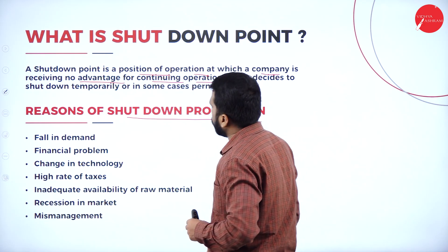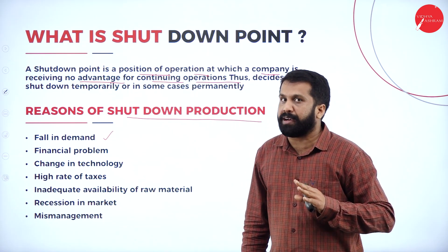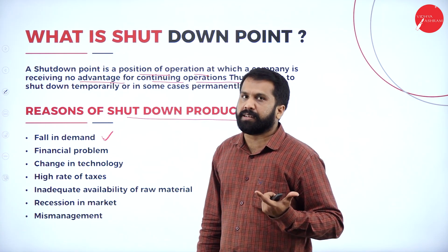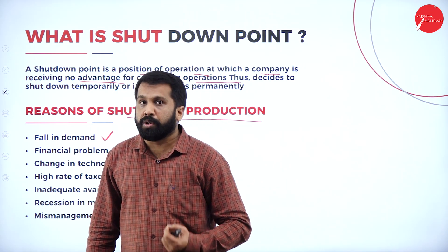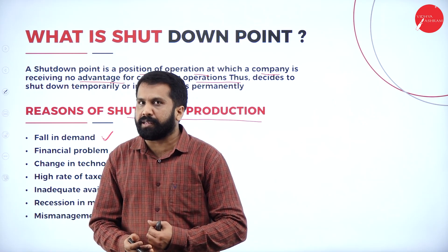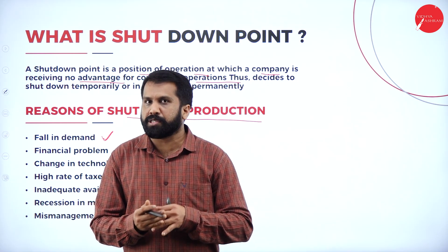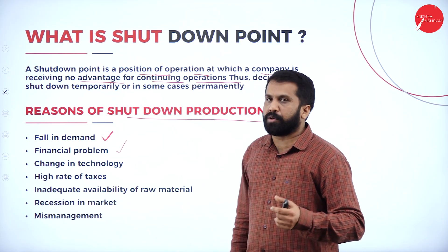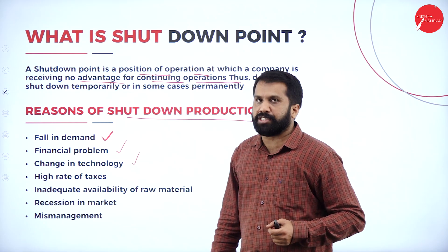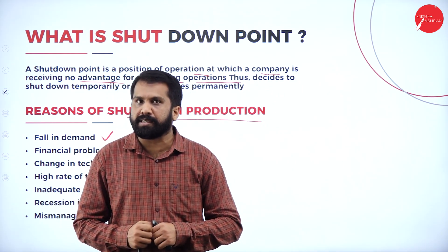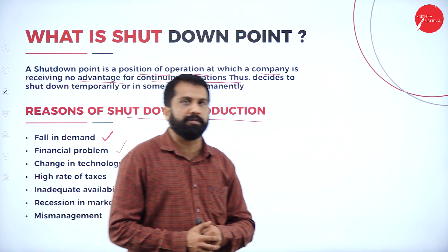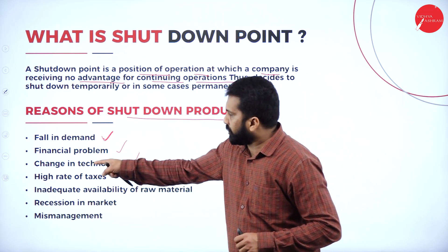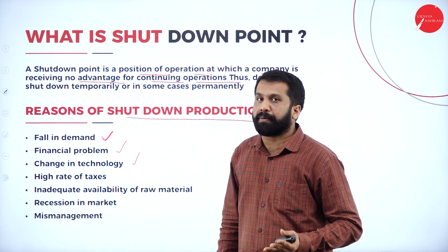Reasons for shutdown: fall in demand — if you start a new company, there may be no demand. For example, umbrellas — there is no proper rainy season, so you cannot sell umbrellas everywhere, and the shutdown point will come. Similarly, financial problems — you don't have money to run your business. Changing technology — typewriters, for example. Now computers are there, and nobody will purchase a typewriter because with a computer you can type, take printouts, and edit. In a typewriter you cannot edit. So there is no demand for typewriters because of computers.